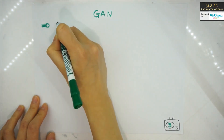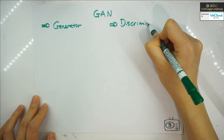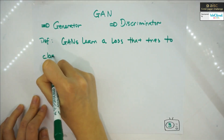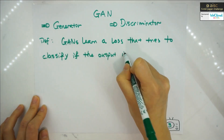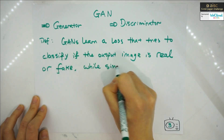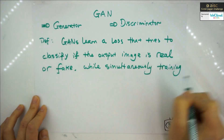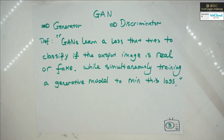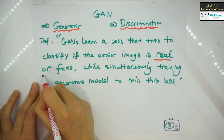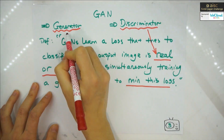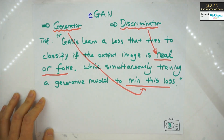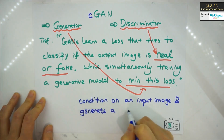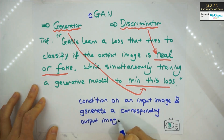GANs have a generator and a discriminator. GANs learn a loss function that tries to classify if the output image is real or fake, while simultaneously training a generative model to minimize the loss function. The discriminator is the real/fake classifier, while the generator wants to minimize the loss. The cGAN conditions on the input image and tries to generate a corresponding output image.